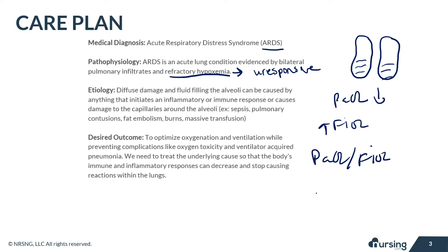If the PaO2/FiO2 ratio is less than 300, it's mild. If it's less than 200, it's moderate. And if it's less than 100, it's severe.